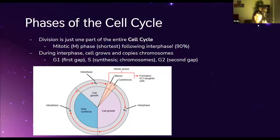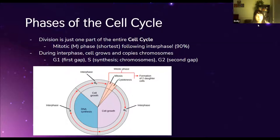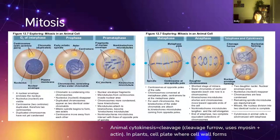In interphase there are more separate phases where the cell undergoes growth and copies its genetic material. The first phase is G1, called 'first gap,' where the cell just grows and gets ready for the S phase, or synthesis phase, where chromosomes actually copy themselves. Then there's a second growth phase, G2, followed by the mitotic phase where they divide. The mitotic phase is made of mitosis and cytokinesis.